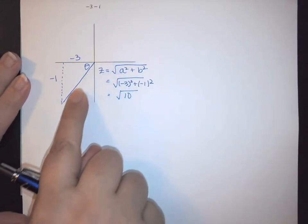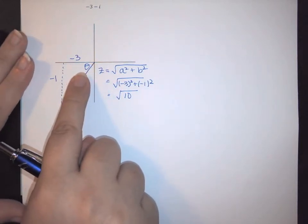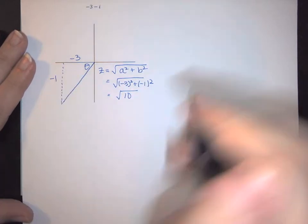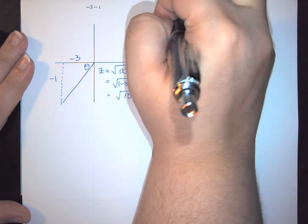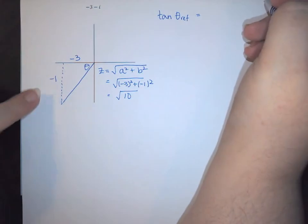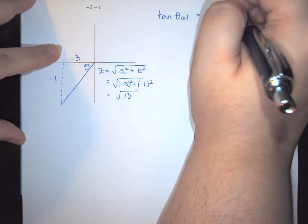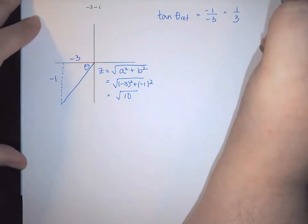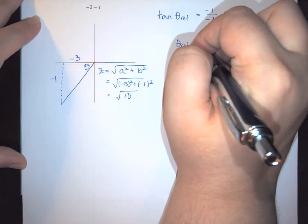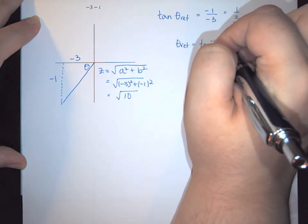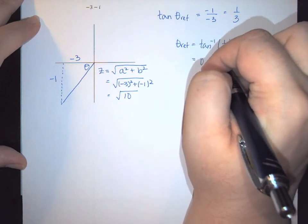Because this is not a nice value to work with, in order to find my reference angle it means we're going to be dealing with radians. My reference angle can be found using the tangent, because tangent is opposite over adjacent. So this would be negative 1 over negative 3, which is the same as 1 third. Therefore my reference angle is going to be the inverse tangent of 1 third, which is the decimal 0.3218.